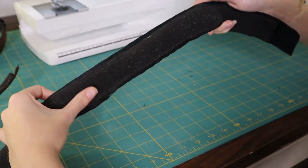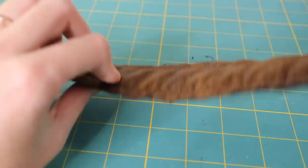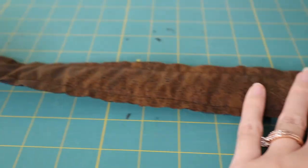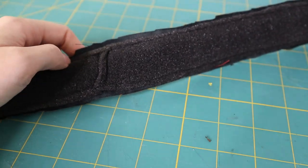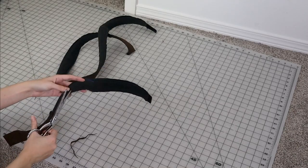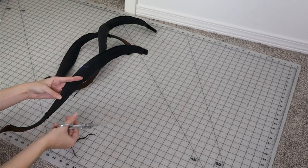So at this point your belt will look something like this. So it'll be exposed packaging foam on one side, and the other side you'll have your top-stitched down leather look. I'm going to go through and I'm going to cut off any excess.